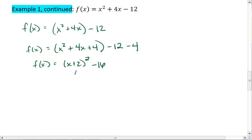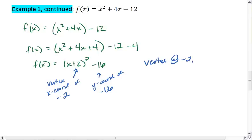What I notice is that this means that my vertex has an x coordinate of negative 2 and a y coordinate of negative 16. We only switch the sign on the x coordinate because it's x minus that coordinate. So this parabola has a vertex at negative 2 comma negative 16.